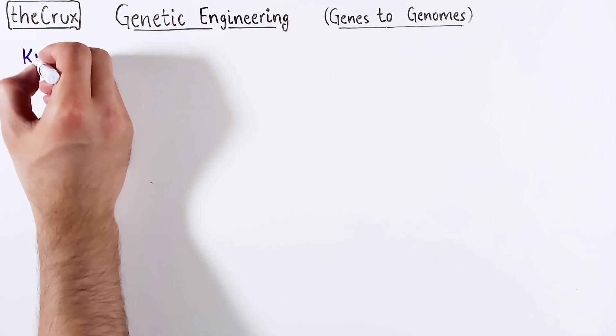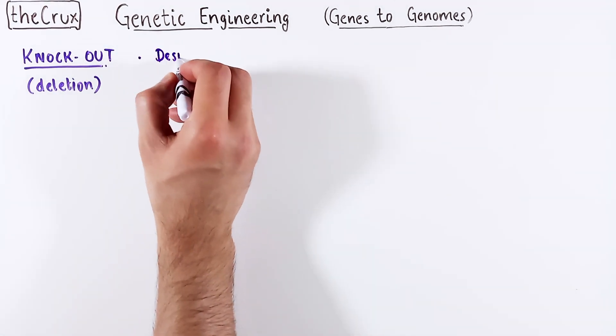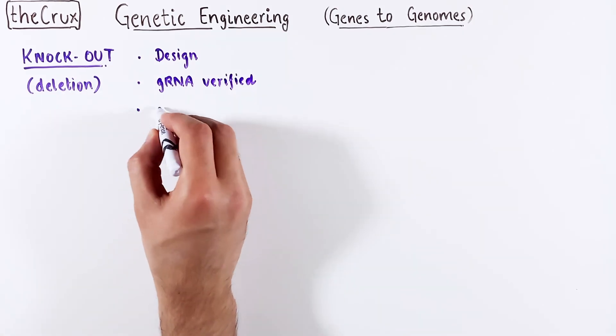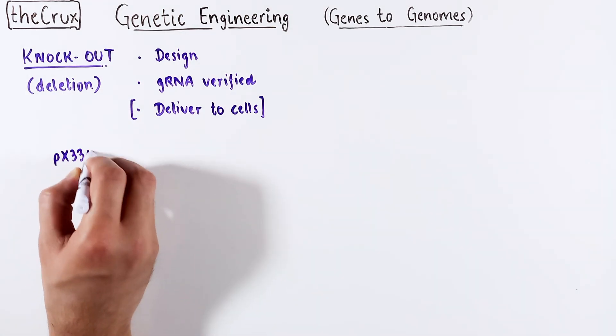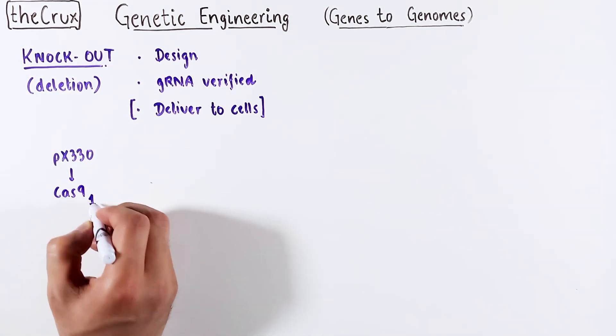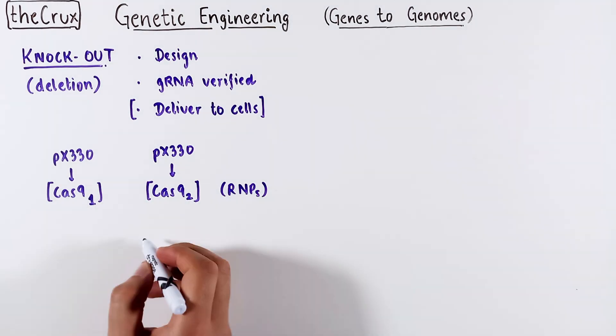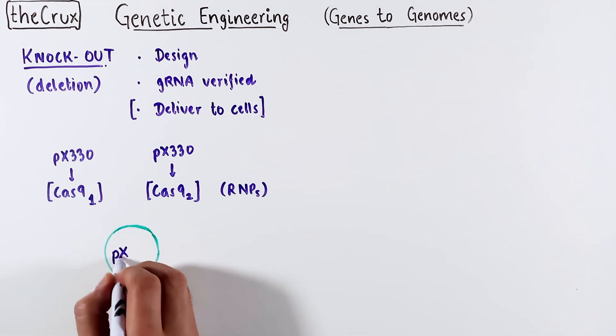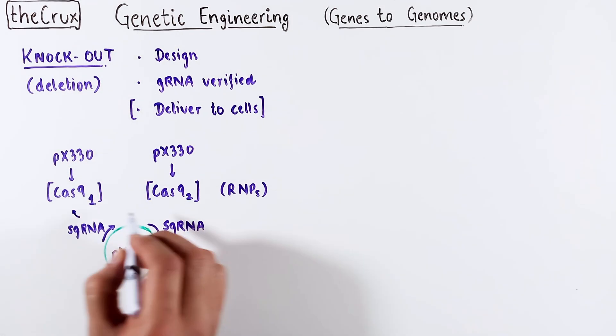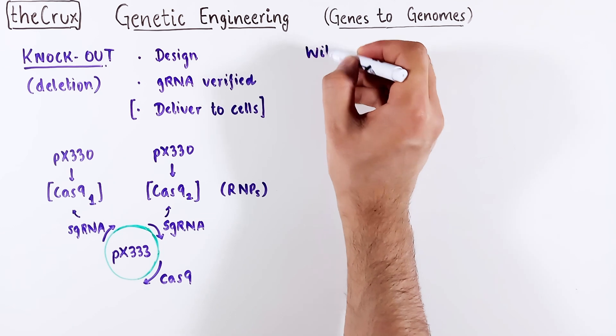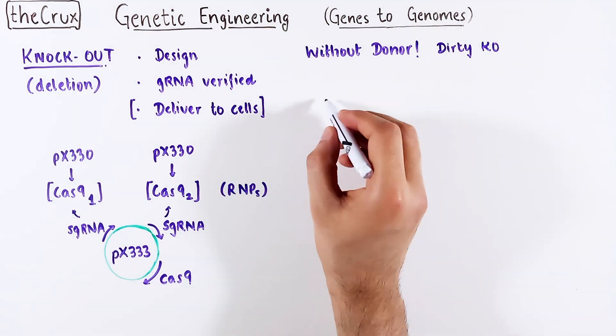I think we have our bases covered to talk about a CRISPR knockout experiment. By now, you conceptually understand how to design and verify guide sequences and you're ready to deliver the components to the cells. For a deletion KO, you use two px330s with different guides and they form two different active nucleases. You can buy them as RNPs as well. Another option is to use px333, which allows you to clone two guides into a single plasmid to result in the same outcomes. By and large, knockouts do not involve any donor DNA. And I'm going to call this a dirty KO and you will see why.